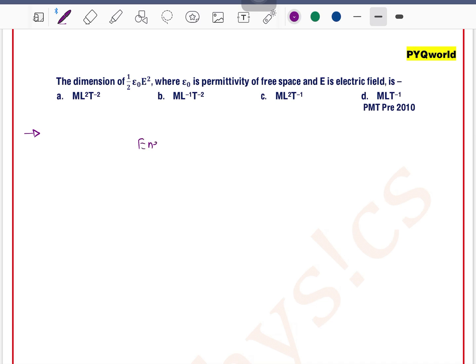Now we know that this formula is of energy density. Energy density can be written as energy density is equal to half epsilon 0 e square. So what is energy density?